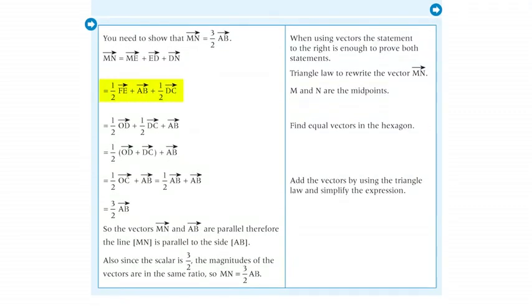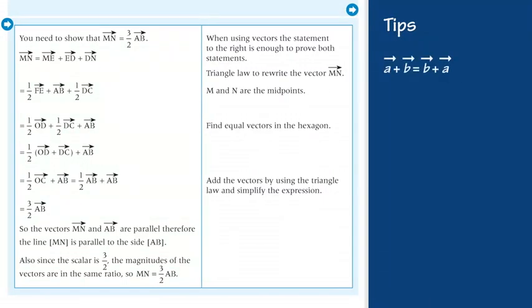Equals half the vector FE plus the vector AB plus half the vector DC. You can use the commutative property of the vector addition, vector a plus vector b equals vector b plus vector a, and find another direction.